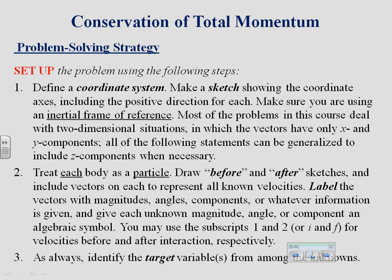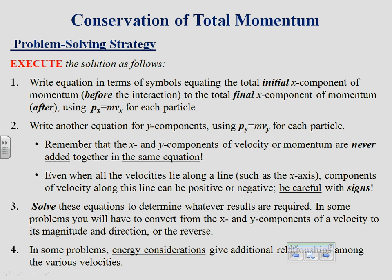Figure out what you're trying to solve for, then set up the momentum equations for the x direction and the y direction for each object. Add together all of your initial x components of momentum to get the total initial x momentum, and add up all of your y components to get your initial total y momentum. Those together give you your total initial momentum. Do the same thing for the final x and y components. Remember that you're adding vectors, so you don't add x and y components together in the same equation.